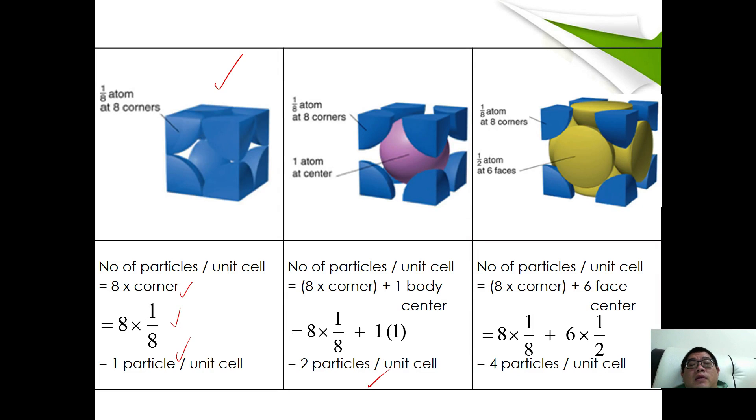For face-centered cubic, we have 6 faces, each of them has half of the atom at the end. We have 8 corners plus 6 face centers, so 8 times 1 over 8 plus 6 times 1 over 2, so we have 4 particles per unit cell.